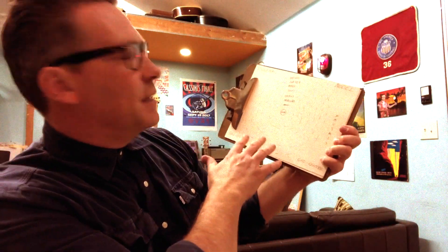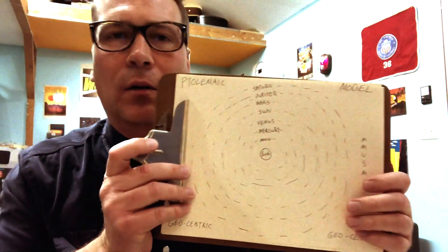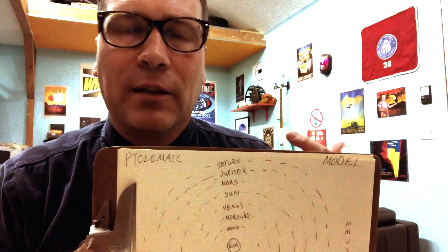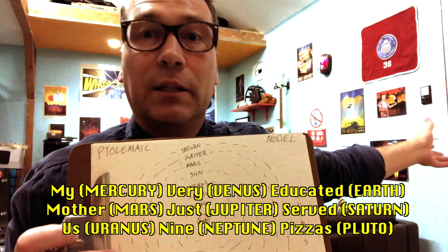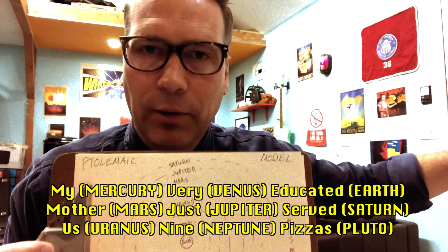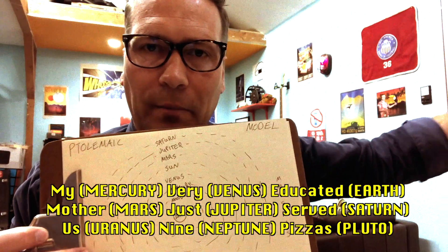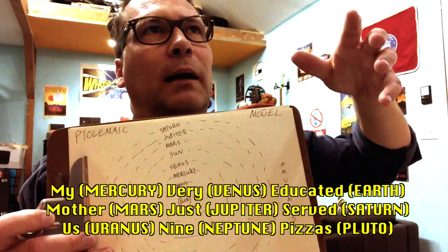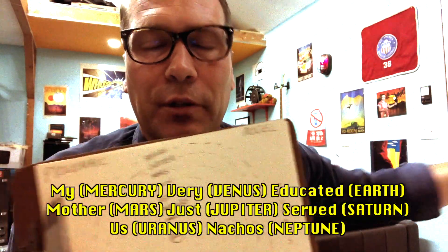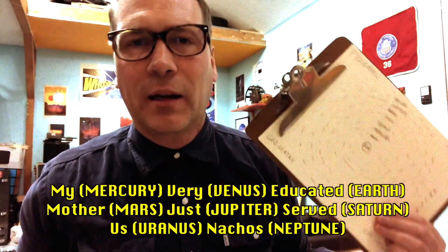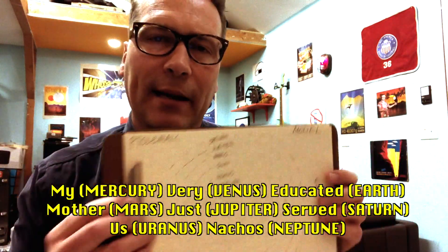I don't think Ptolemy would have called it geocentric — maybe he did, I don't know — but I think that's more of a retroactive term that we've used. Now with the order of the planets we have nowadays, we say: my very educated mother just served us nine pizzas, back when Pluto was still a planet. That's how you remember the order of the planets. And then once Pluto got dumped, people said: my very educated mother just served us nachos. So that's a mnemonic device to help remember the order of the planets.